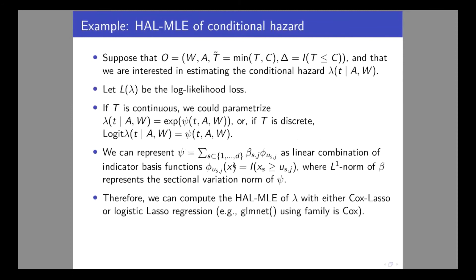HAL can be used to estimate logistic functions, conditional densities, or conditional hazards. Many times we can use standard software like GLMNET, which has the Cox family, allowing Cox-LASSO regression with this extensive basis to fit the conditional hazard in a very nonparametric way. This is important if we want to estimate causal effects of a treatment on survival — treatment-specific survival curves under treatment and control — where we need to estimate that conditional hazard using HAL or super learner including HAL, followed by a targeting step.